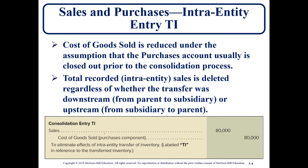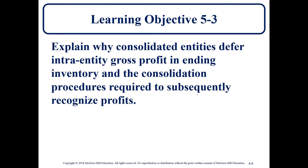We're going to use consolidation entry TI. Consolidation entry TI is only applicable in the year of sale — the year we're preparing the financial statements for. If the sale took place in 2019, we're preparing it for 2019; we do not use entry TI for sales that took place a year prior. It only applies to the year we're preparing the financial statements, and we credit cost of goods sold.